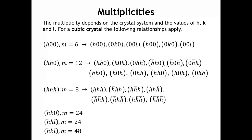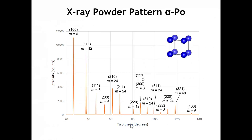The reason why multiplicity changes is that zero can't be positive or negative, so the number of zeros in the H, K, L values matters. It also matters whether two of the indices are the same or different. For the 1-1-1 peak, the multiplicity is eight. And for a general H, K, L where all three numbers are different from one another and none are zero, the multiplicity goes up to 48.